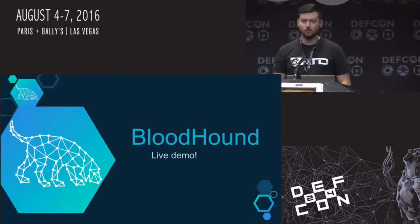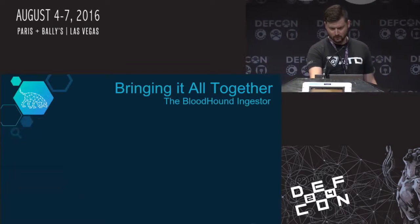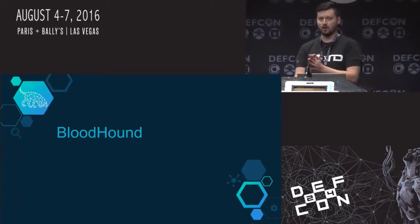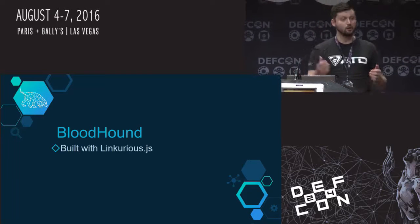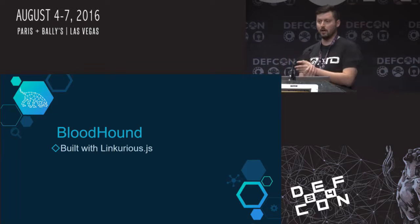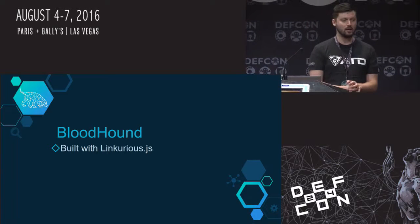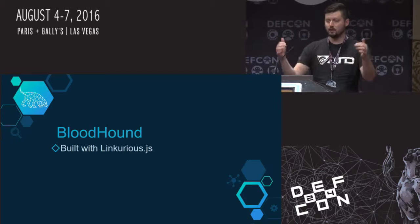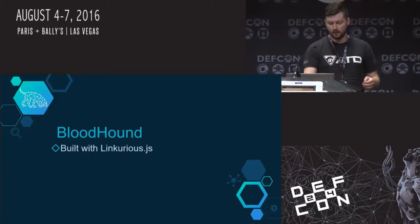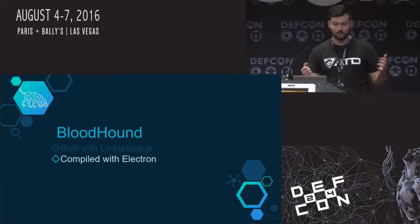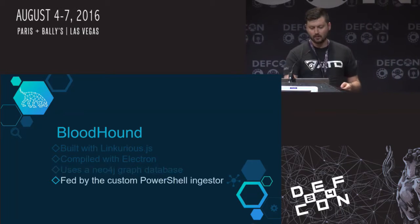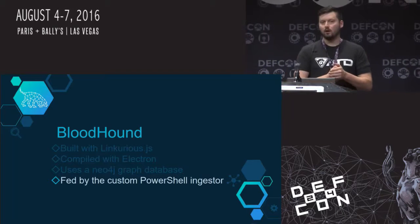One thing worth briefly touching on is the architecture of Bloodhound and the open source projects it relies on. Linkurious.js is the open source and free version of Linkurious — if you're developing a web frontend to interface with Neo4j, that's where you want to go. It's built on top of Sigma, so a lot of difficult JavaScript work is abstracted away. It's compiled with Electron, so it's cross-platform. And most importantly, we rely on Neo4j as our graph database, fed by the PowerShell ingestor.